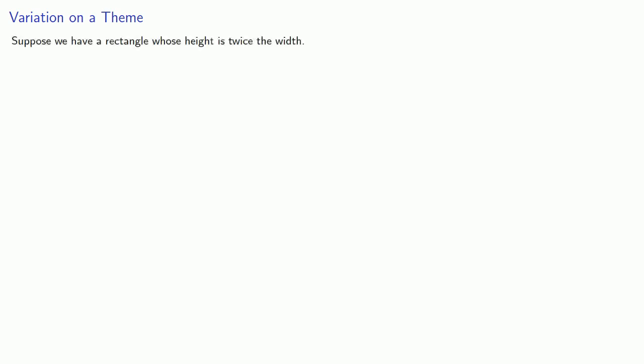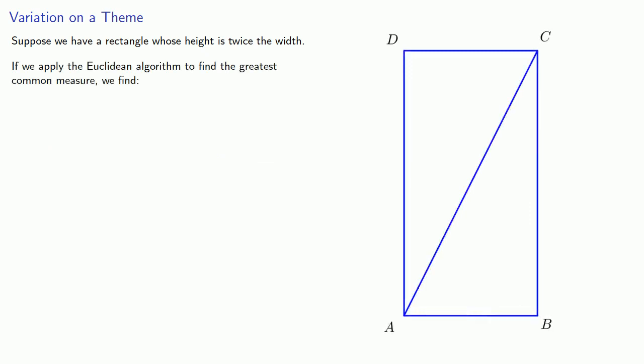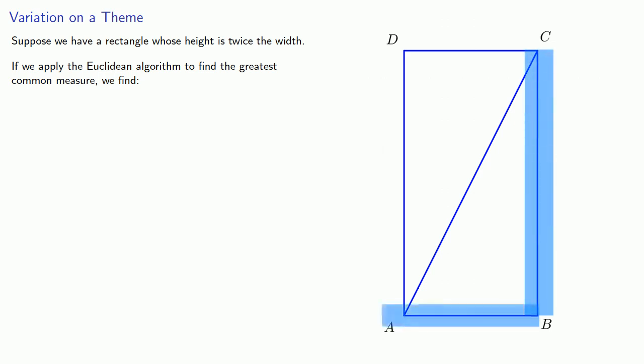If these numbers were created using the Euclidean algorithm, we can apply several variations on a theme. Suppose we have a rectangle whose height is twice the width. Since the rectangle has one side twice as long as the other, it's convenient to work with the shorter side.